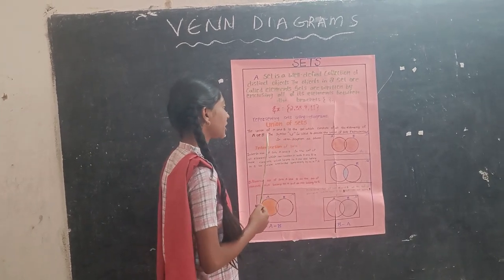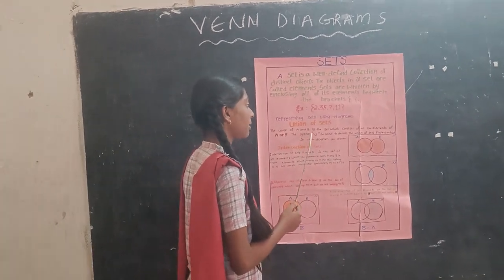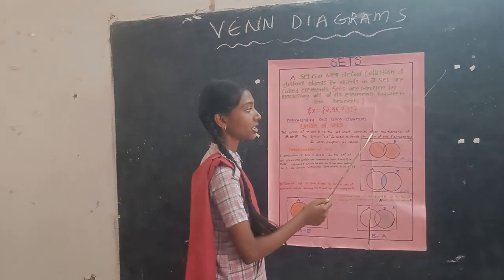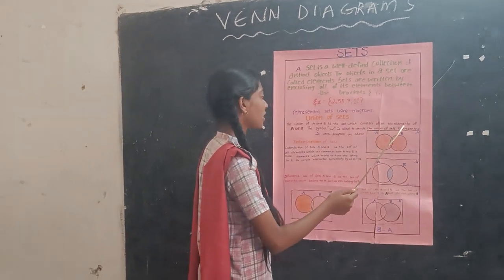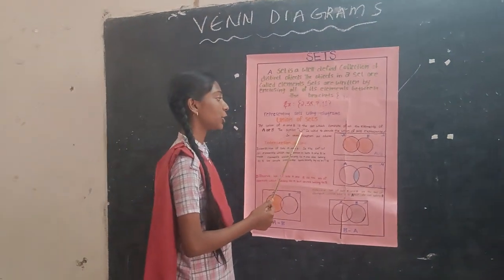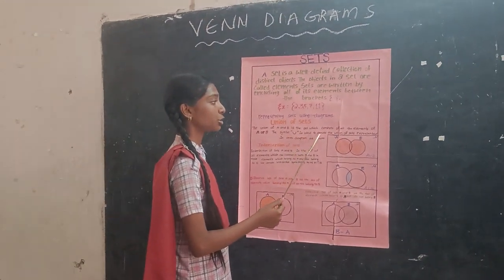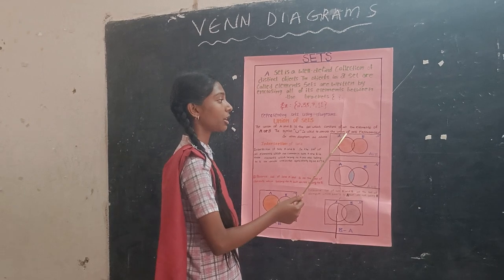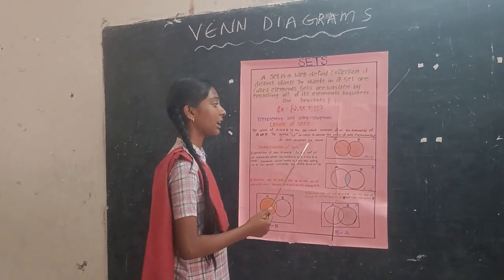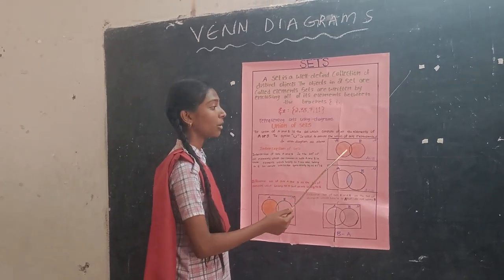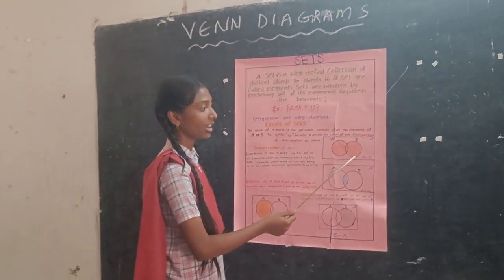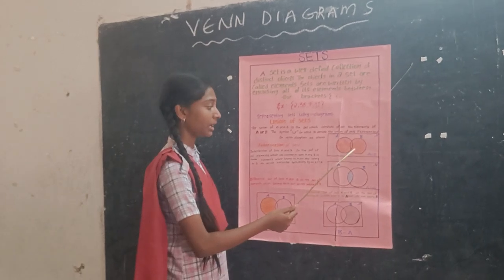Union of sets. The union of sets A and B is the set which consists of all elements of A or B. The symbol union is used to denote the union, represented in Venn diagrams as shown. This is the Venn diagram of A union B.